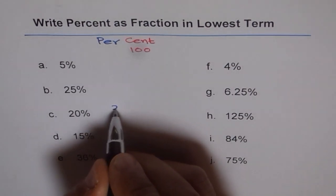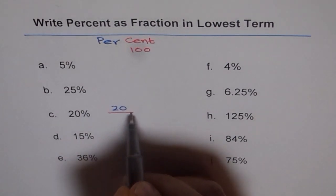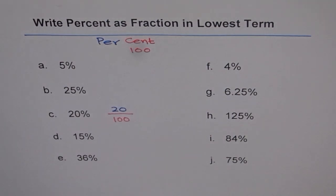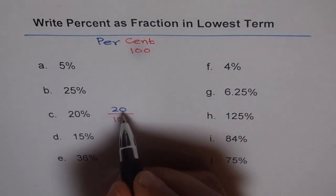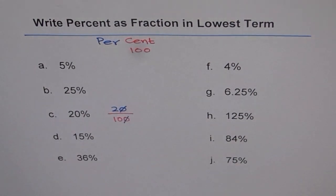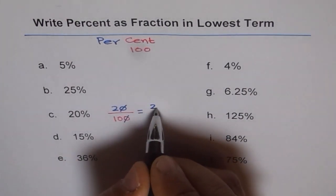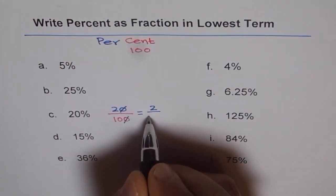So 20% will be 20 over 100. Now you can simplify it. You can divide first by 10. So always it is good to divide by 10 first. Then you get rid of this. You get 2 over 10. So the first step is divide by 10 most of the time. So you get 2 over 10.